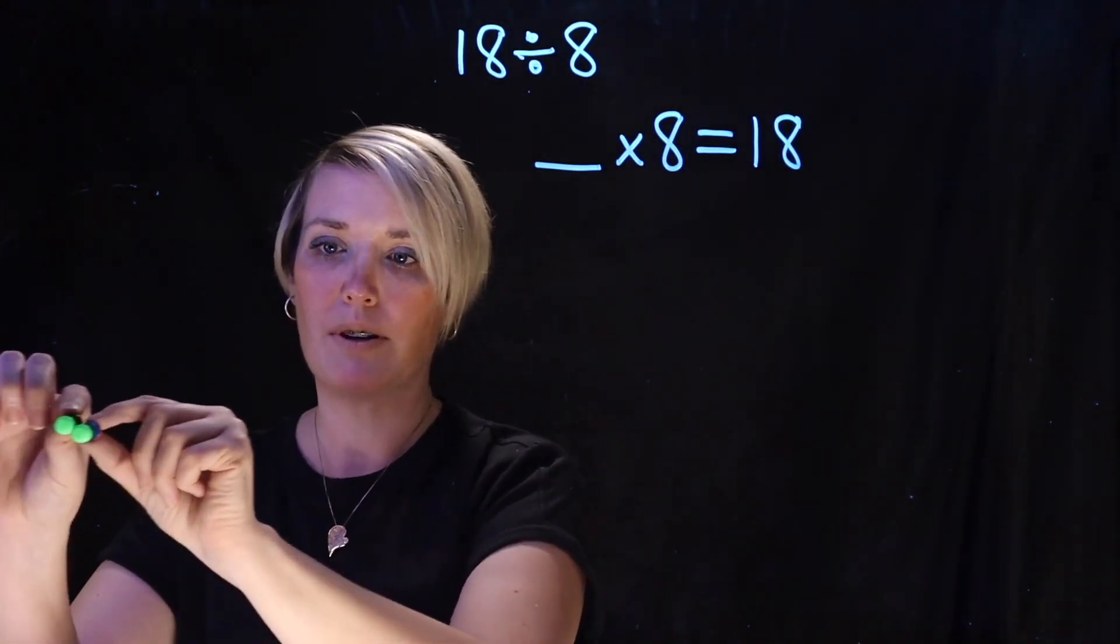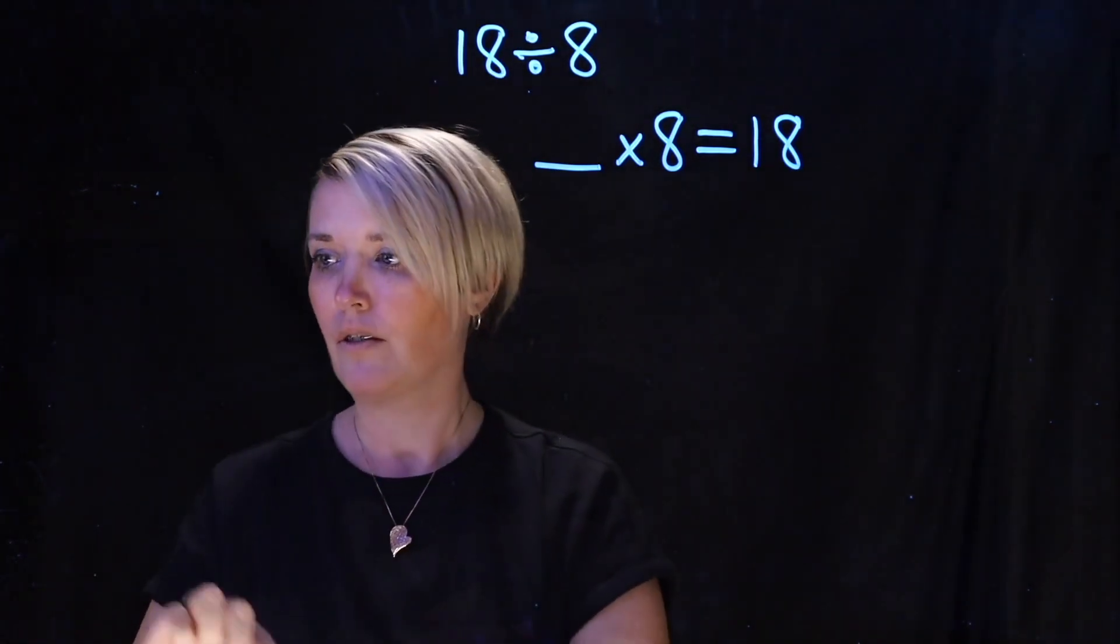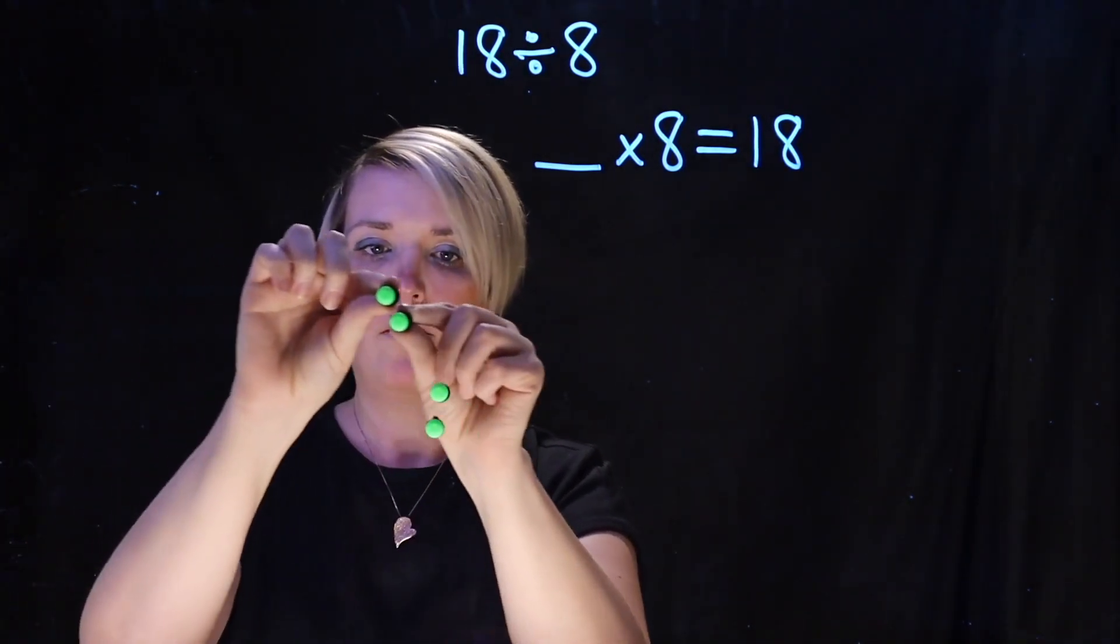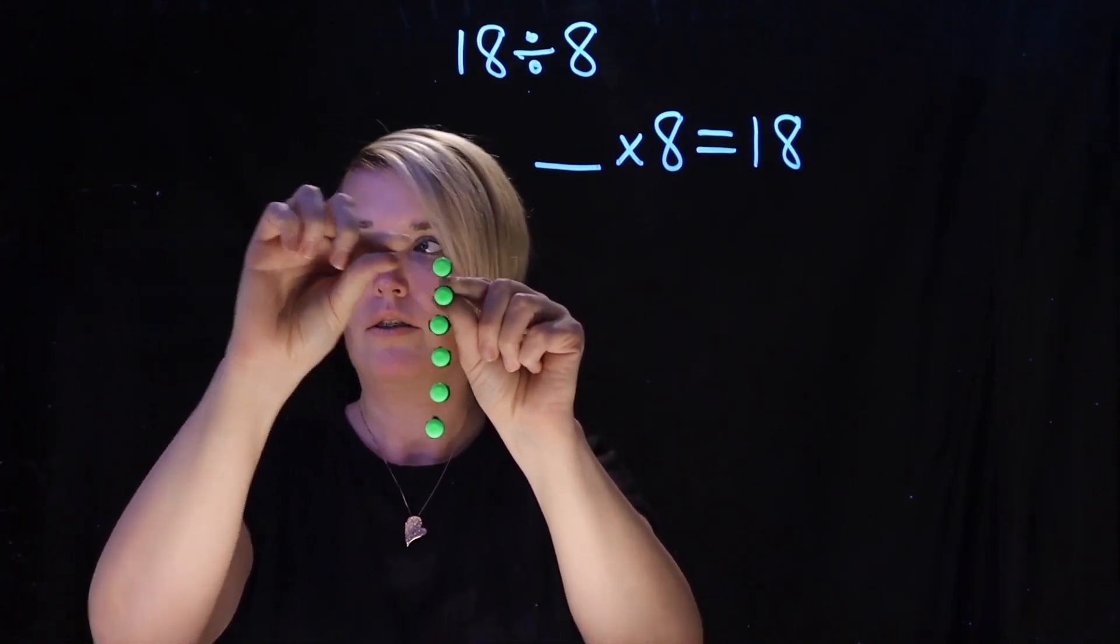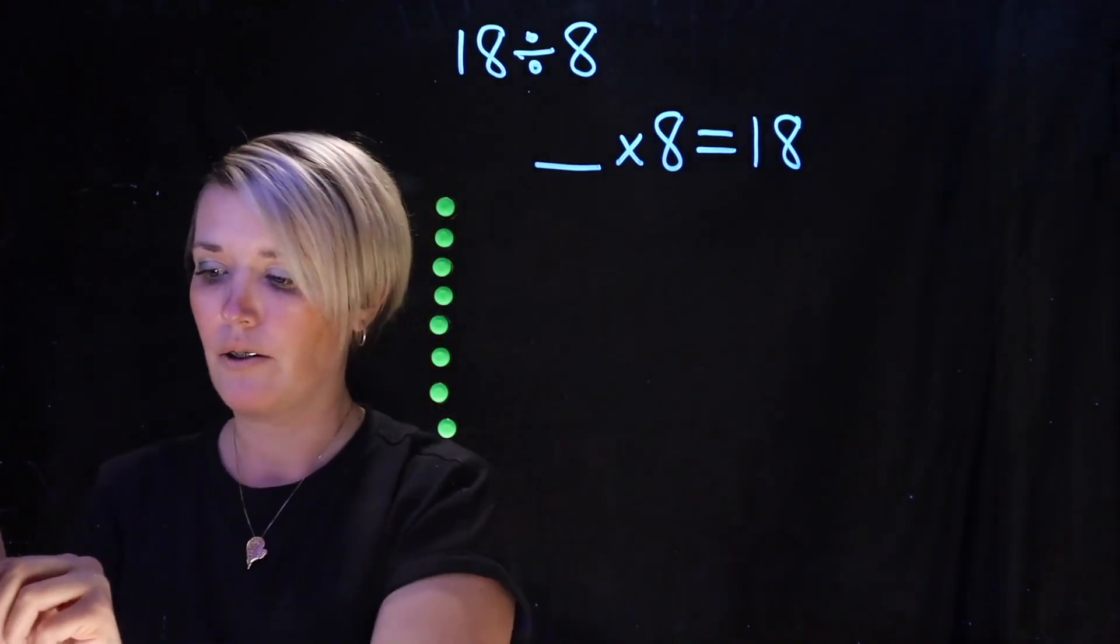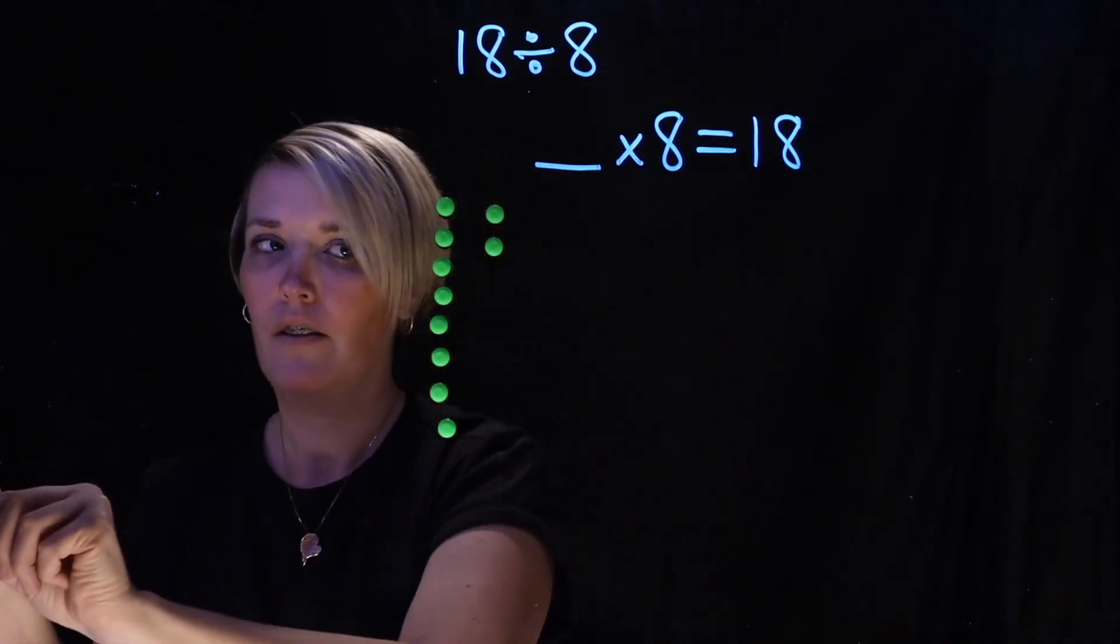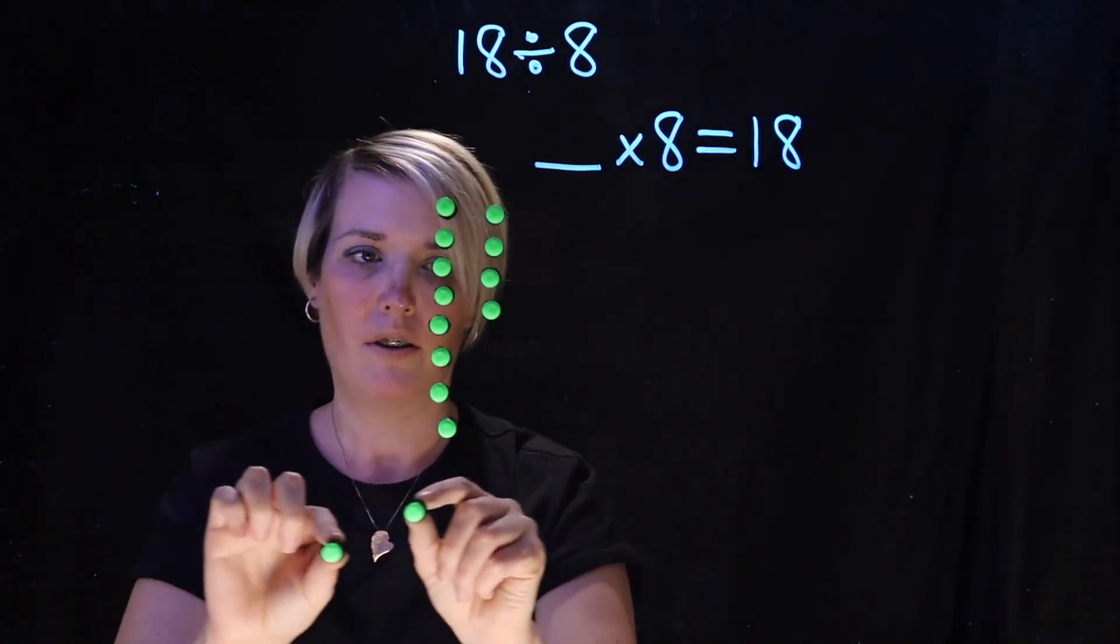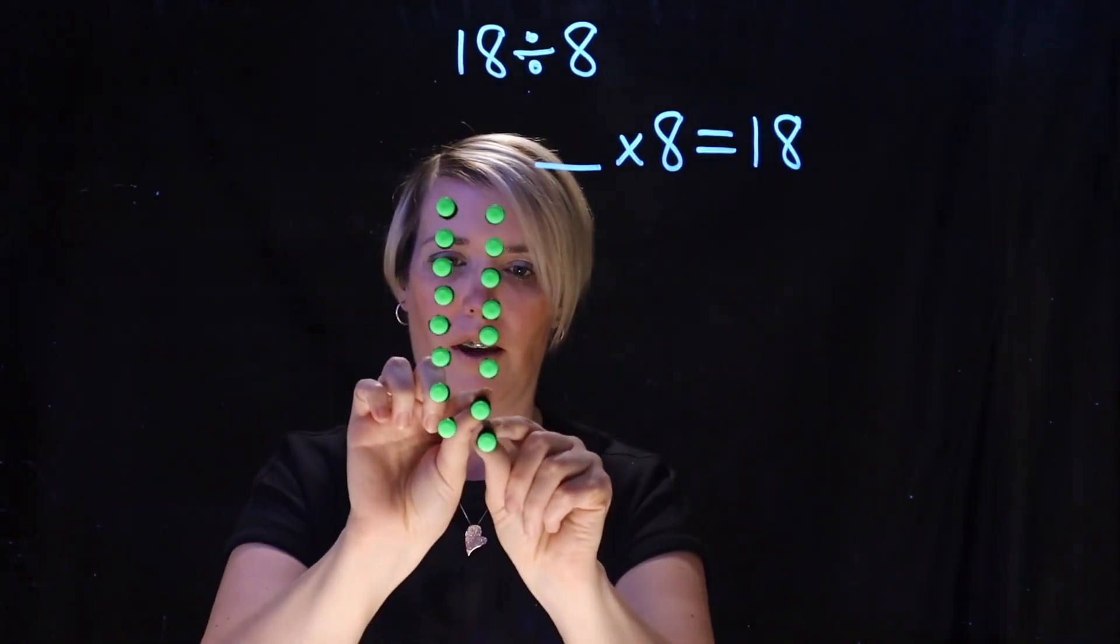I'm going to start by bringing out one group of 8. So there's 2, 4, 6, 8. So there's one group of 8 but that's not 18. So let's bring out another one. 2, 4, 6, 8.